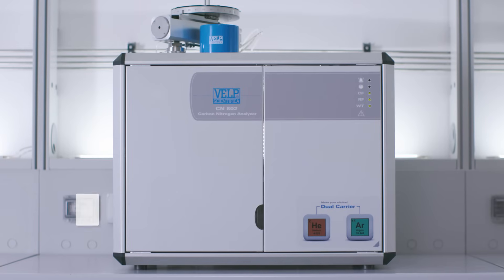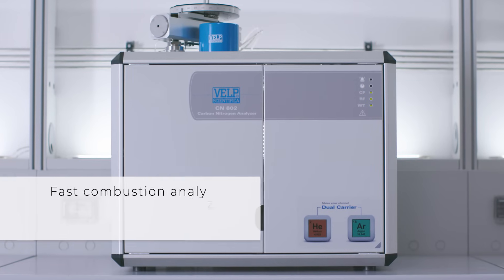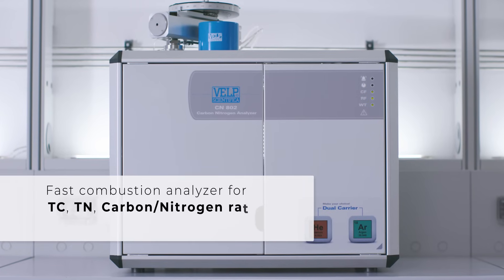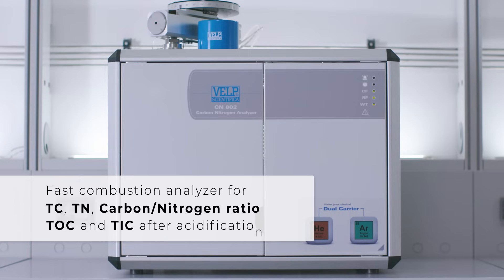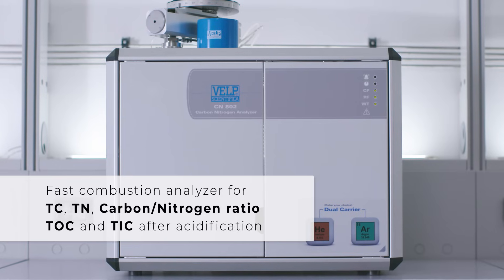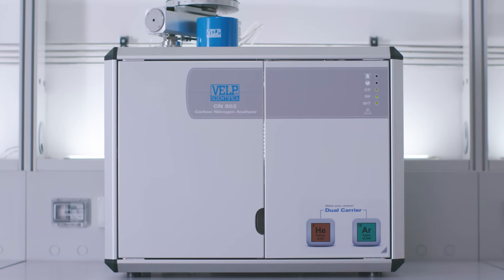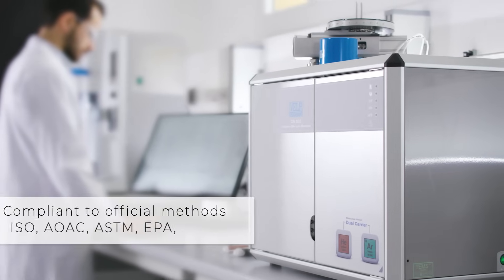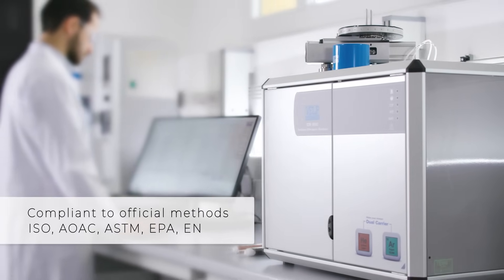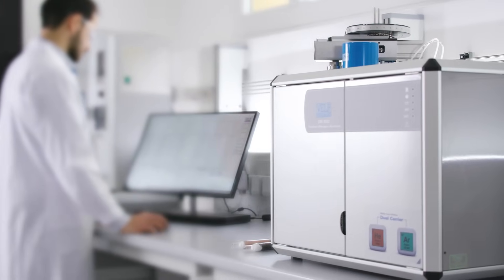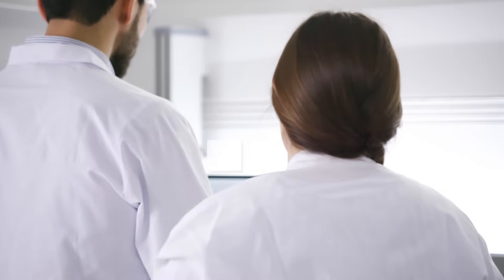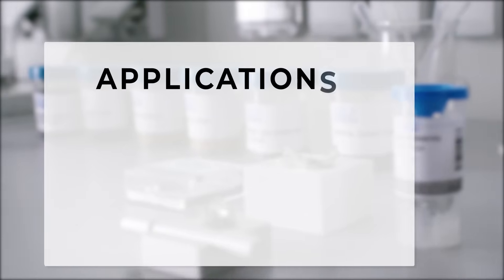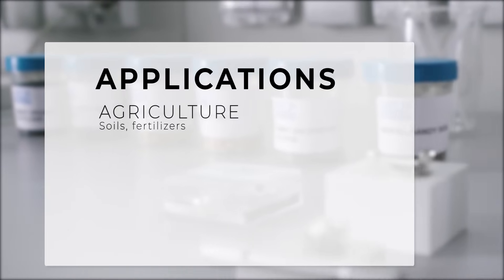The VELP Scientifica CN802 is the accurate and precise combustion analyzer for simultaneous carbon and nitrogen determination in diverse organic matrices in just a few minutes. The CN802 is a robust and flexible combustion analyzer that works in accordance with official reference methods for the determination of carbon and nitrogen in many industrial sectors such as agriculture.